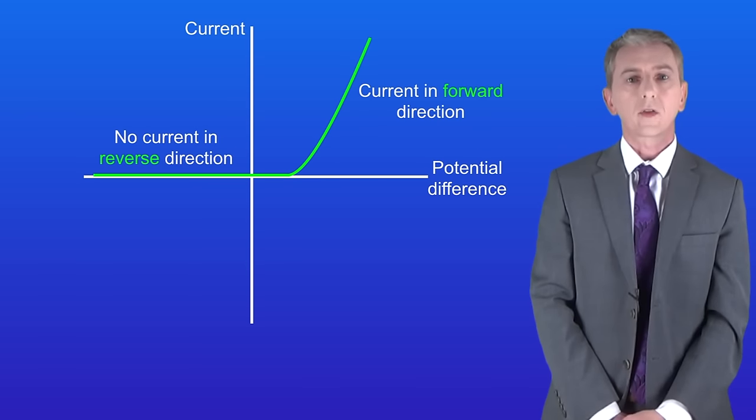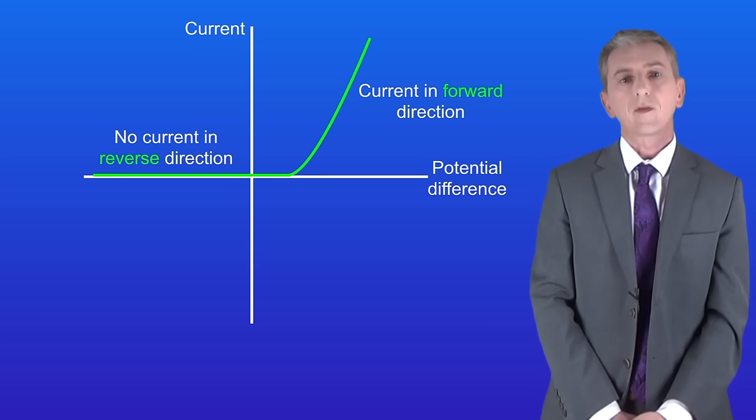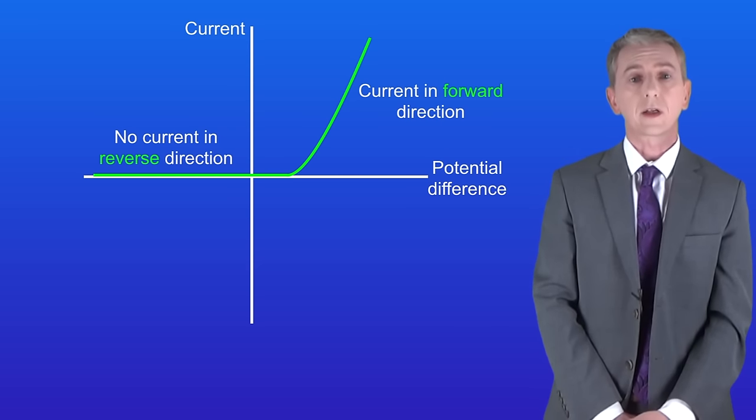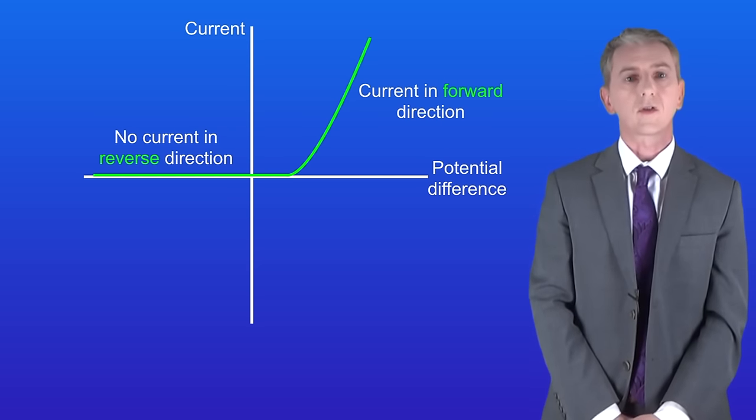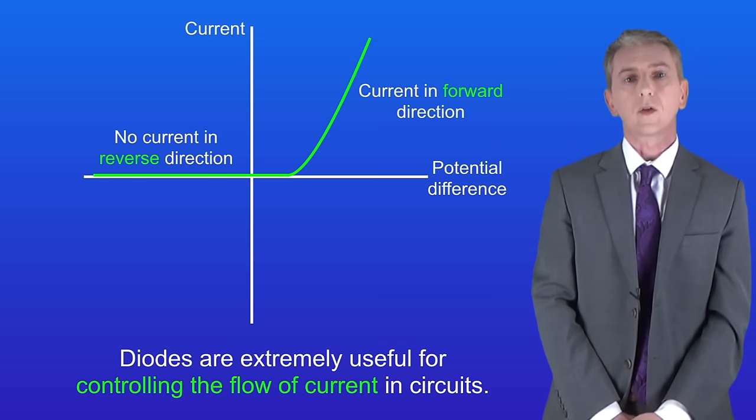So, if we take a look at the current potential difference graph for a diode, we can see that no current can flow in the reverse direction. However, in the forward direction, the current increases as the potential difference increases. So what this means is that diodes are extremely useful for controlling the flow of current in circuits.